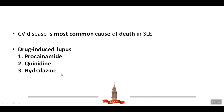Important cardiovascular drugs can induce lupus-like manifestations, including procainamide, quinidine, and hydralazine. Procainamide and quinidine are antiarrhythmic drugs; hydralazine is a direct vasodilator. These drugs can alter the autoimmunity state and tolerance and, in the presence of susceptibility genes and environmental factors, can induce lupus-like manifestations. Patients taking these medications should be monitored carefully.